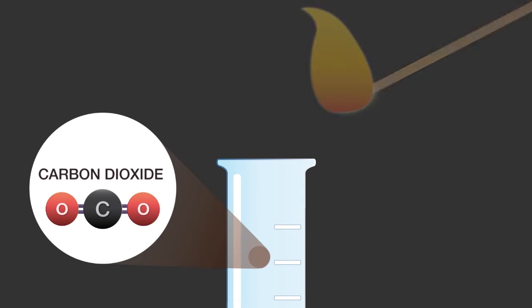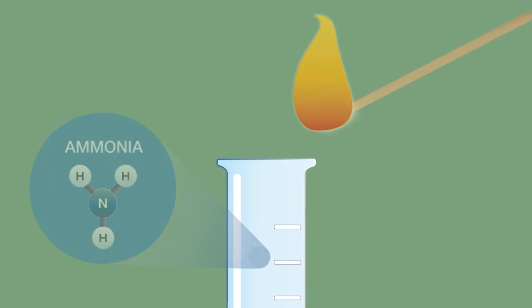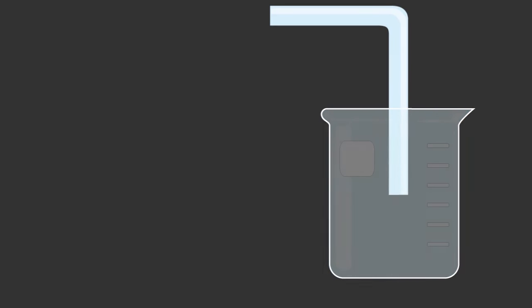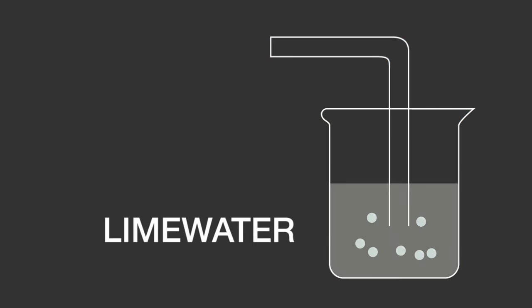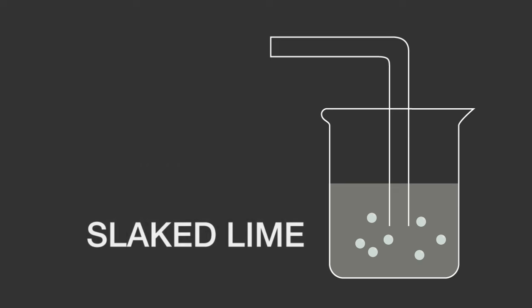Carbon dioxide will extinguish a lit splint, but the same occurs in the presence of ammonia. A more accurate test is to bubble carbon dioxide through lime water, which is an aqueous solution of calcium hydroxide, also known as slaked lime. Lime water turns milky in the presence of carbon dioxide due to the formation of calcium carbonate.